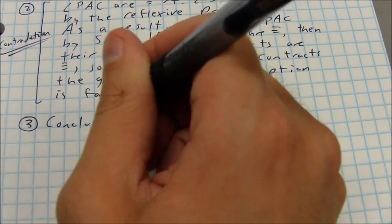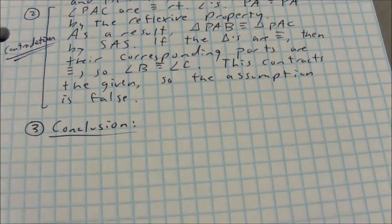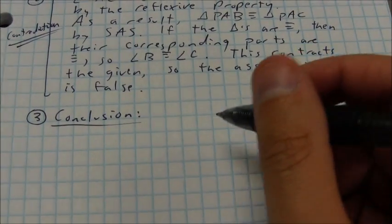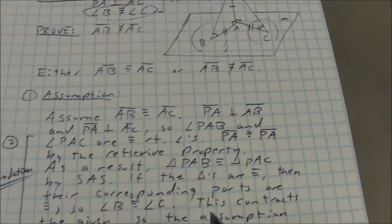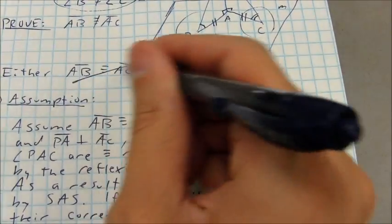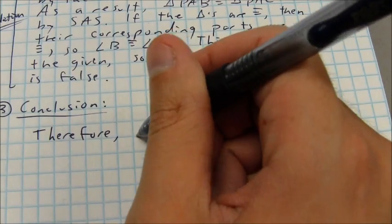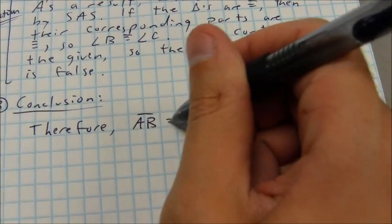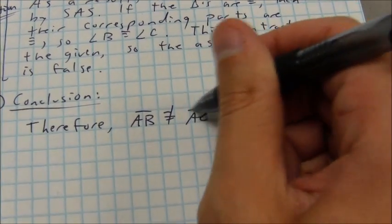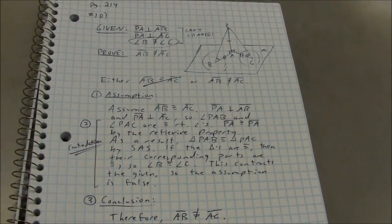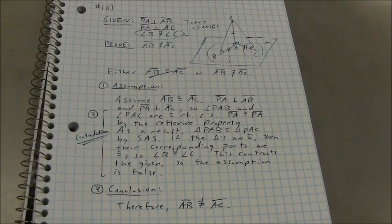The conclusion is, if my assumption is false, that means that this is not true, which means that this has to be. So I'll say, therefore, AB is not congruent to AC. And that ends my indirect proof.